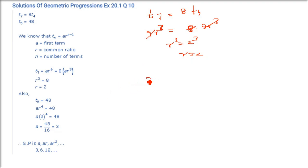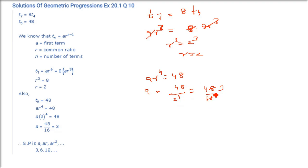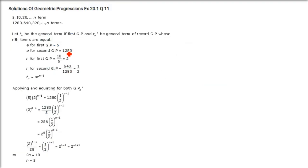Now using T5: a·r^4 = 48. With r = 2, r^4 = 16, so a = 48/16 = 3. Now a = 3 and r = 2 are known. The GP is a, a·r, a·r²... which gives 3, 6, 12...